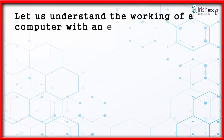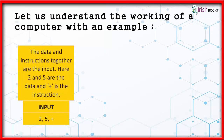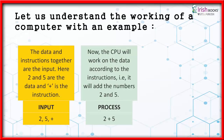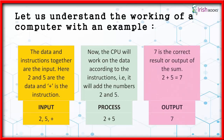Let us understand the working of a computer with an example. The data and instructions together are the input. Here, 2 and 5 are the data and plus (+) is the instruction. The CPU will work on the data according to the instructions — it will add the numbers 2 and 5. Process: 2 + 5. The result, 7, is the output. Output: 7.